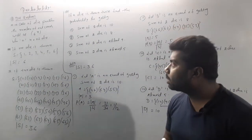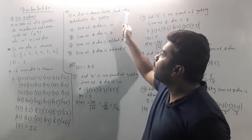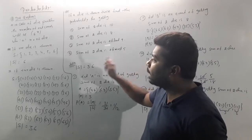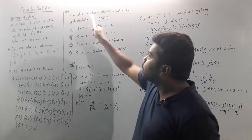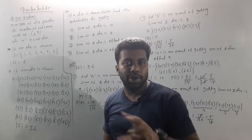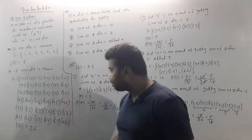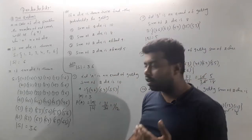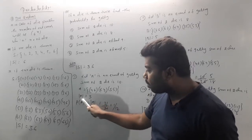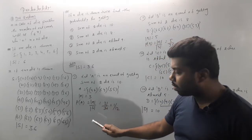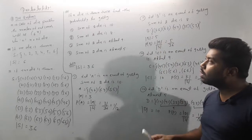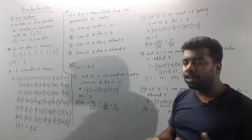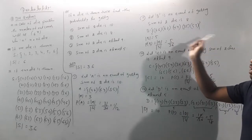Question: If a die is thrown twice, find the probability of getting a sum of 10, sum of 8, sum of at least 9, and sum of at most 5. The die is thrown twice so the total outcomes are 6² = 36. Let A be the event of getting a sum of 10. The favorable outcomes are (4,6), (5,5), (6,4) — so |A| = 3, and P(A) = 3/36 = 1/12. Let B be the event of getting a sum of 8. B = {(2,6),(3,5),(4,4),(5,3),(6,2)}, |B| = 5, so P(B) = 5/36.